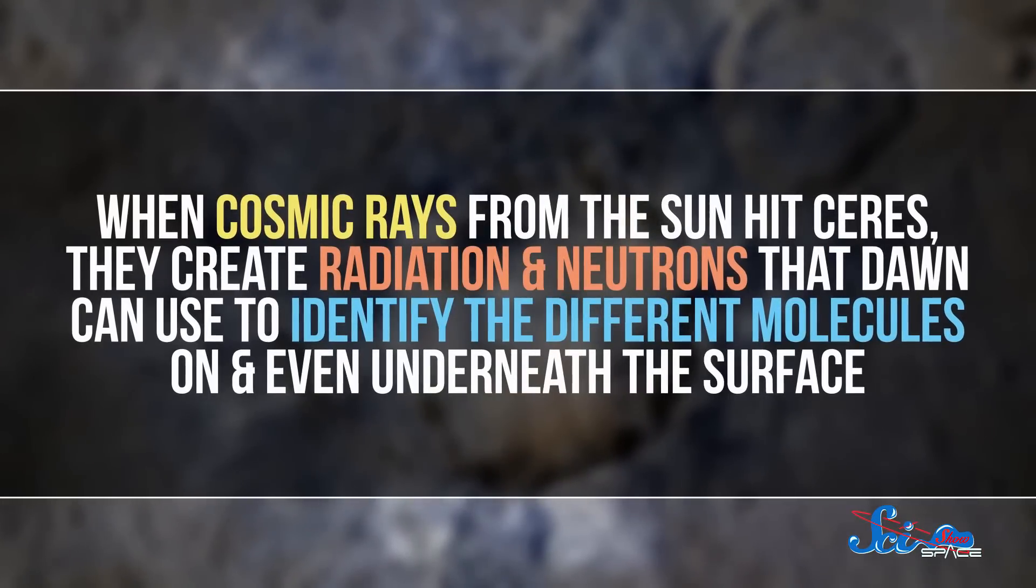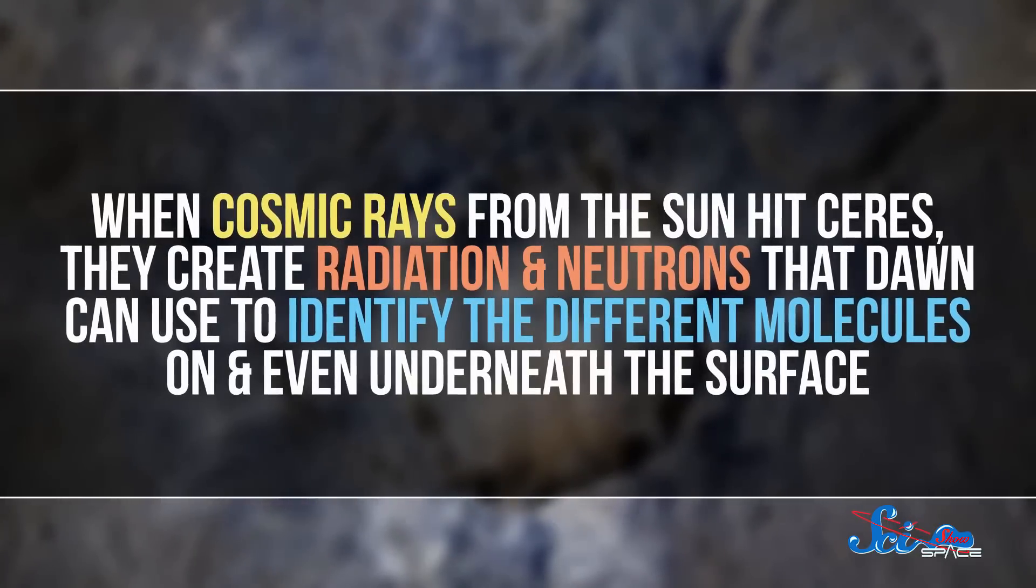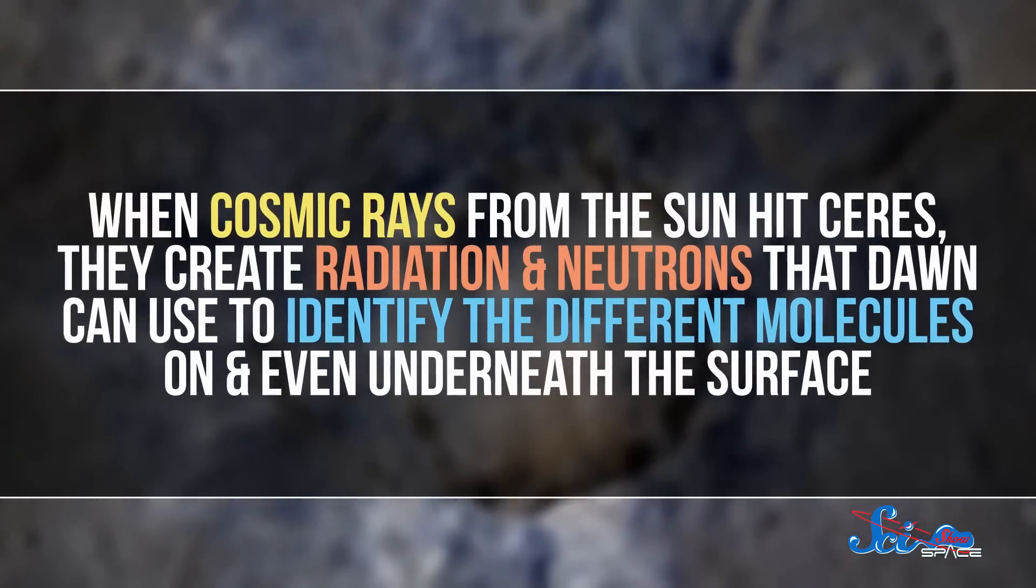When cosmic rays from the Sun hit Ceres, they create radiation and neutrons that Dawn can use to identify the different molecules on and even underneath the surface. Dawn did a lot of this during its mission, but since we got some extra time, we're hoping to get the clearest data we can.